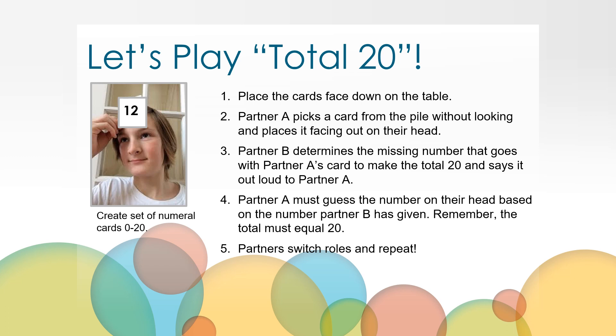First, mix up the cards and place them face down in a pile in the middle of the table. Partner A will pick a card from the pile without looking and place it facing out on their head, just like the boy in the picture. Partner B's job will be to figure out the missing number that goes with the number they can see on their partner's head to make the total 20. And then they'll tell that number out loud to partner A. Then, partner A must guess the number on their head based on the information partner B has given. Remember, the total must equal 20.